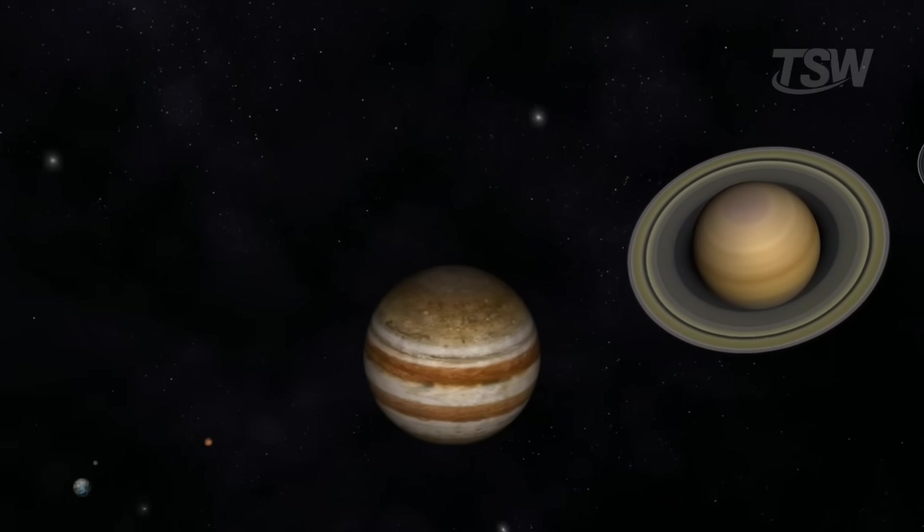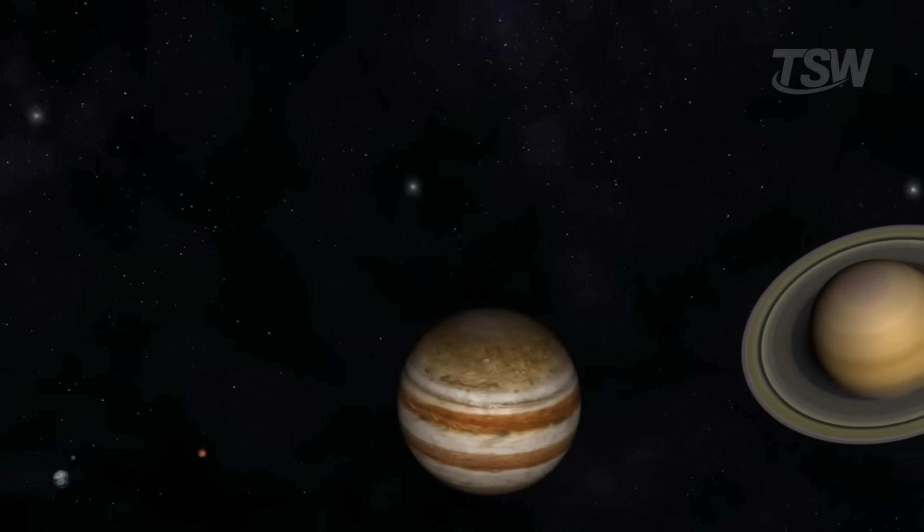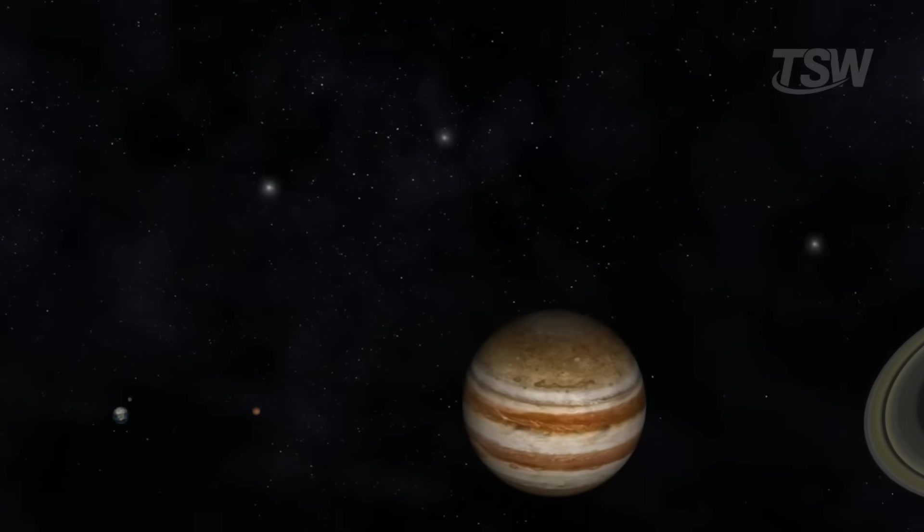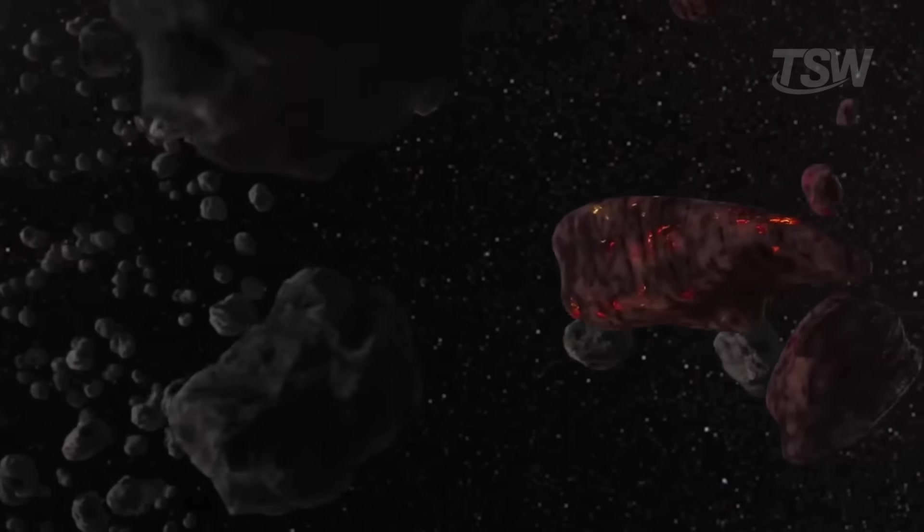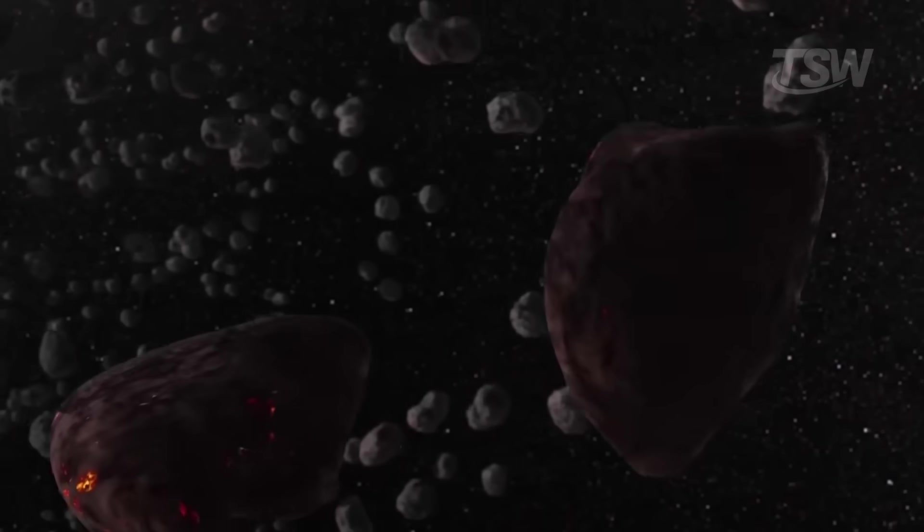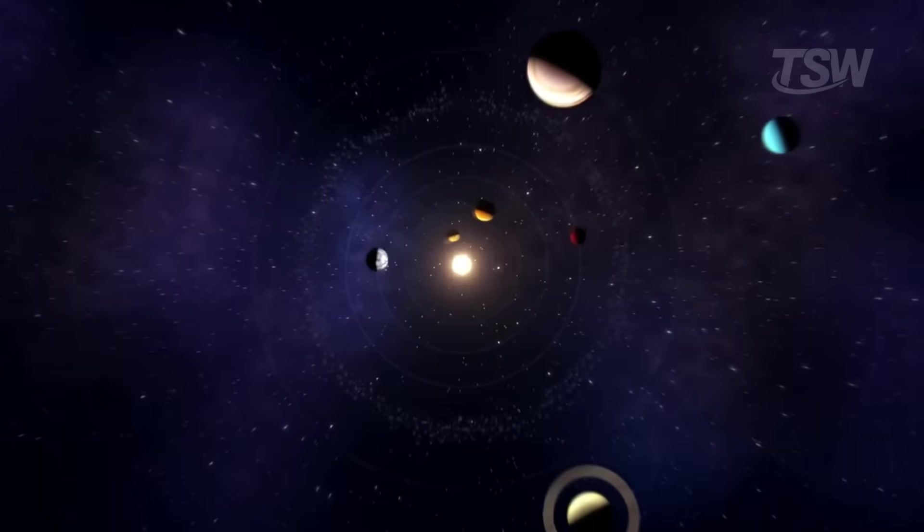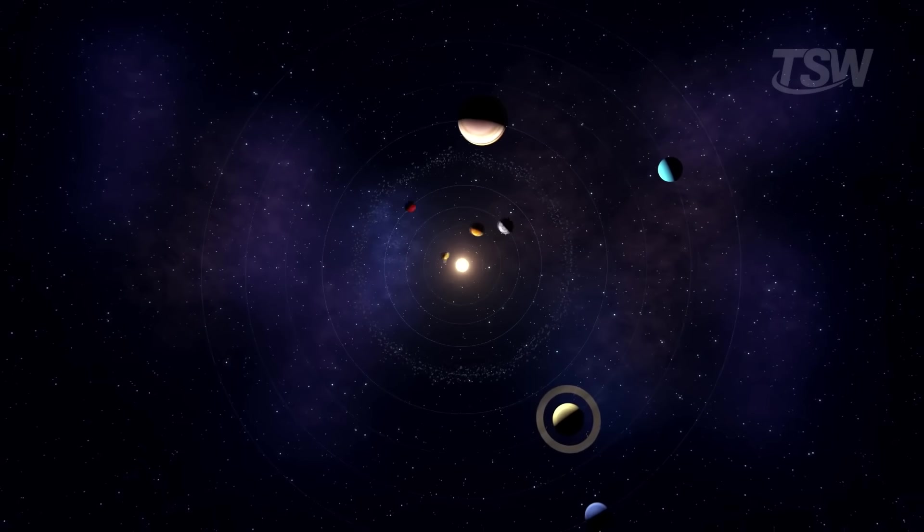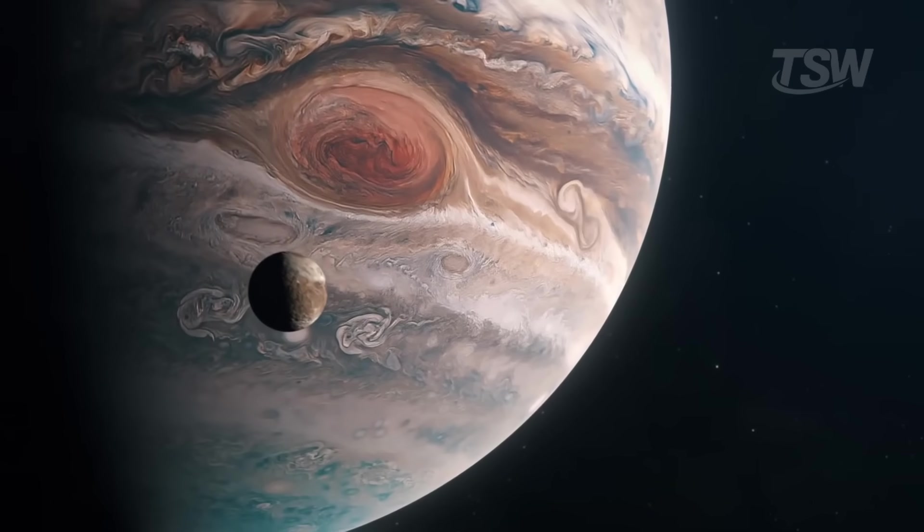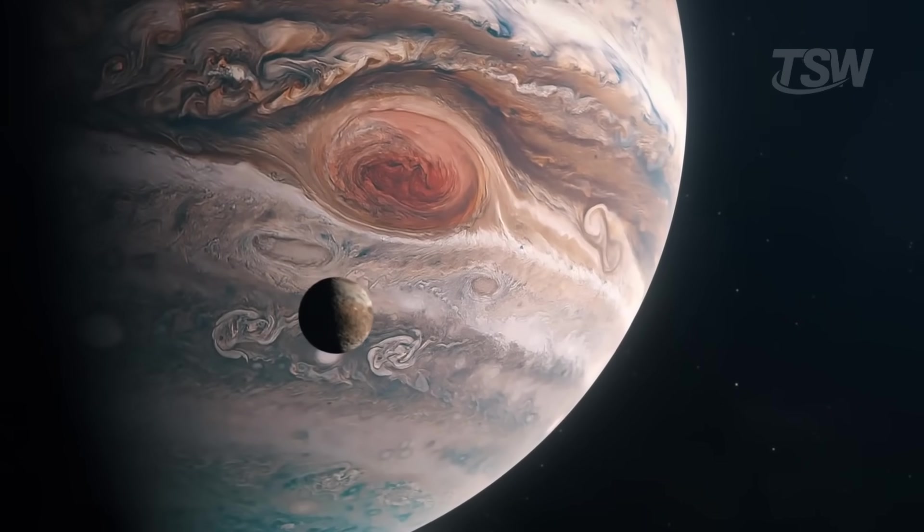Jupiter, the gas giant, has acted for billions of years as a gravitational goalkeeper. Its mass is so large that many incoming objects end up captured, deflected, or even flung away before they get near Earth. In some cases, sure, Jupiter can also redirect bodies inward. But on balance, it has protected us far more than it has threatened us.